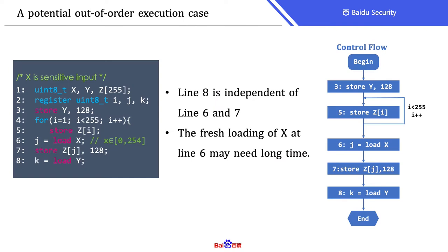Now let's go back to the example. We observe that line 8 is data independent of line 6 and line 7, because they are accessing different variables. At line 6, the program loads X for the first time, and it may take a long time due to a slow main memory visit. By contrast, line 8 loads Y, and Y was accessed at line 3, so Y may still be in cache and loading it would be much faster. As a result, line 8 could be scheduled before line 6 and line 7, as shown by the figure on the right.